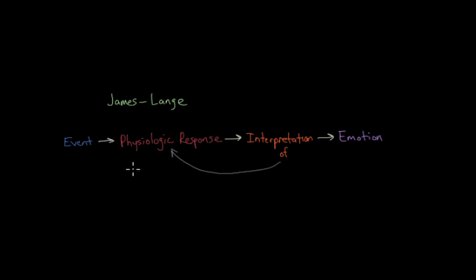And what makes the James-Lange theory of emotion unique is that they say it's the interpretation of this physiologic response that causes the emotion of happiness. So it's not actually holding your cat per se that's making you happy. It's what the cat's doing to your body that makes you feel the way you do. So it's your awareness of these processes occurring that make you realize you're happy.